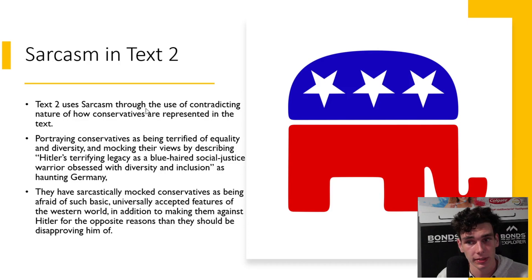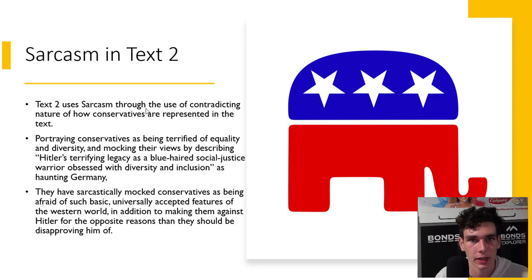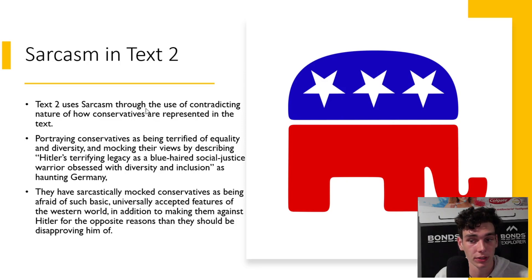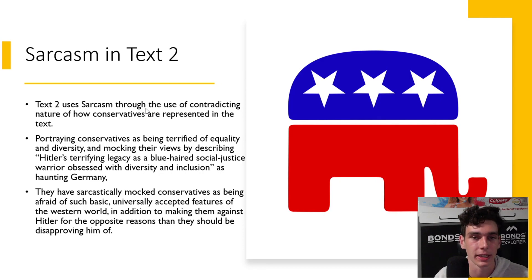Text 2 uses sarcasm through how conservatives are represented. Their views are mocked, as they're presented as being terrified of diversity and equality. A quotation from the text states: "Hitler's terrifying legacy as a blue-haired social justice warrior obsessed with diversity and inclusion still haunts Germany to this day." This quote mocks conservatives being afraid of accepted features in the Western world, making them seem against Hitler for the wrong reasons and making fun of their stance against progressiveness.